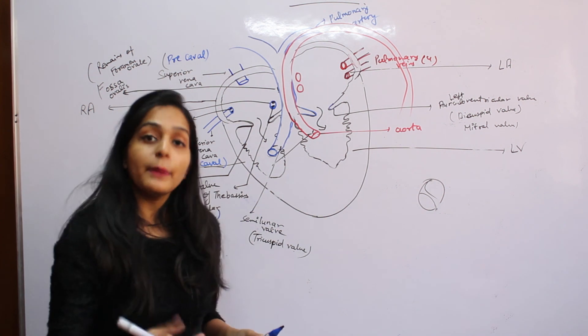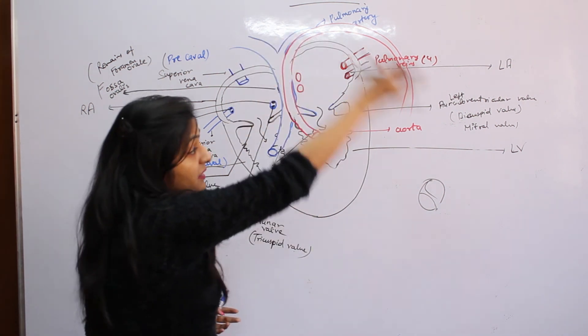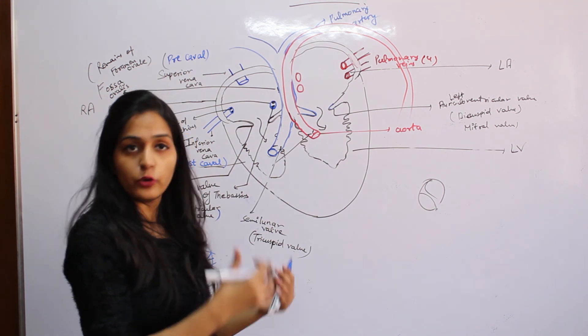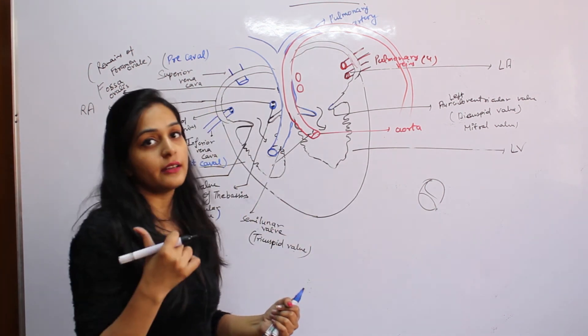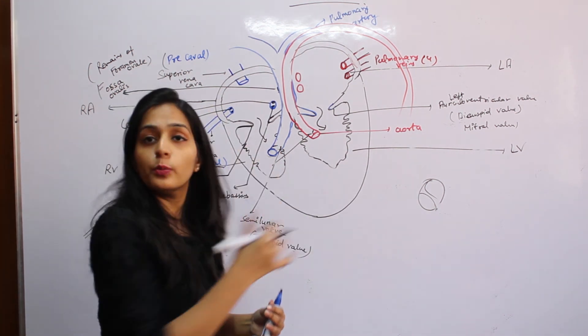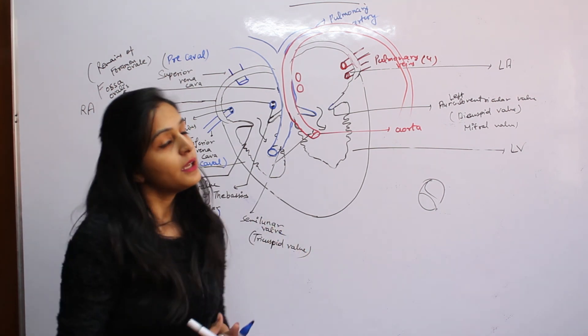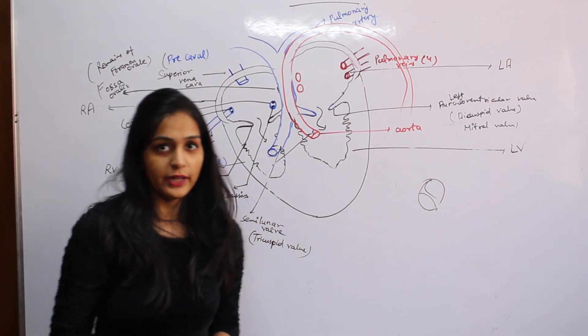You know, the mammalian aorta turns to the left side. In the case of birds, it turns to the right side. This is the difference between birds' and humans' hearts. The rest of these things are the same. Thank you.